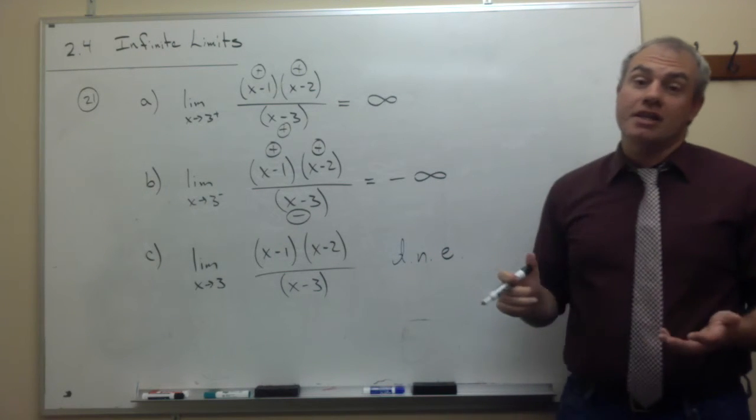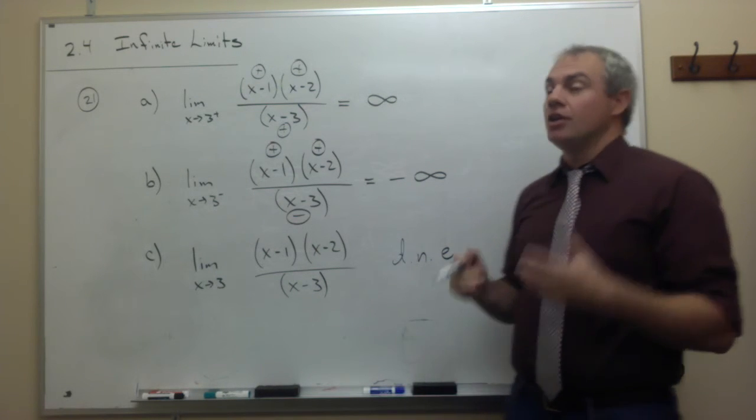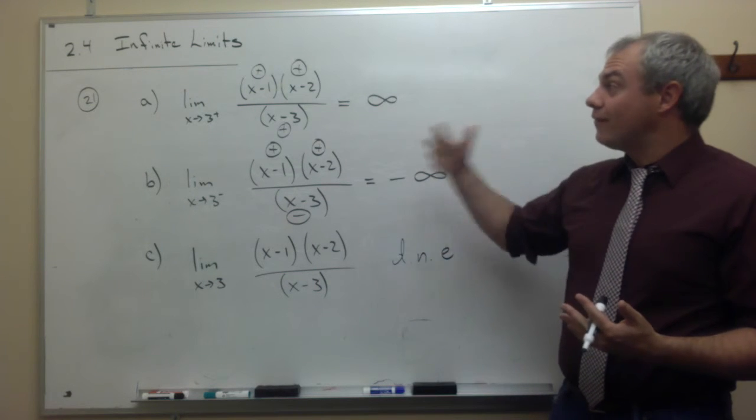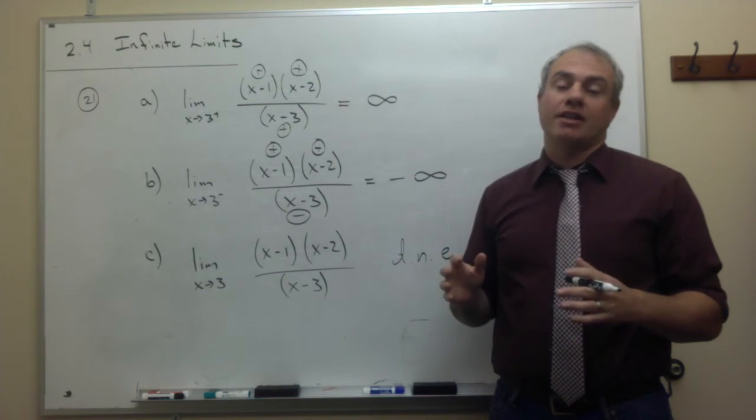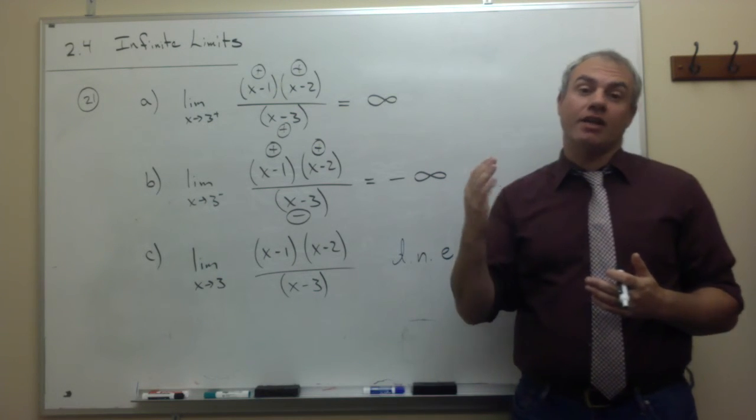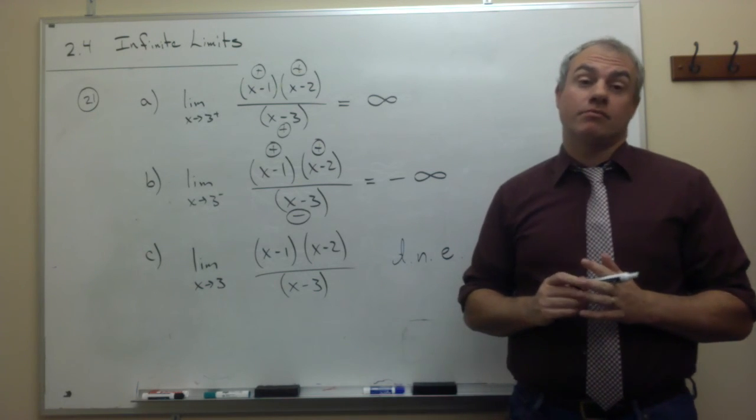So, the real key in these vertical asymptote problems is you have to remember if I determine it's a vertical asymptote, there's very little to be done at this point except for determining is it going off to positive infinity or is it going to negative infinity. Once you figure that out, that's all of the work.